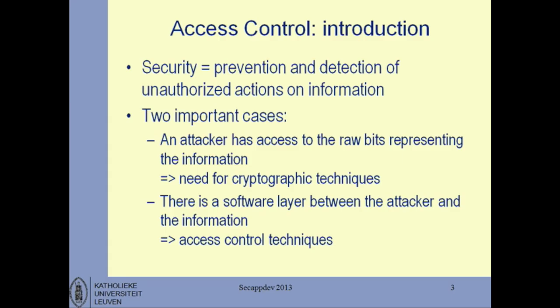There is a second important case: where there is some kind of software layer that you as a defender control between the attacker and the information you care about. The prototypical example is if the attacker is accessing a server — he can send requests and look at responses, but cannot immediately access the database or hard disk behind it. You have a piece of server software like a database management system sitting between the attacker and the actual data. This is where access control plays an important role. You as a defender get to structure that software layer.